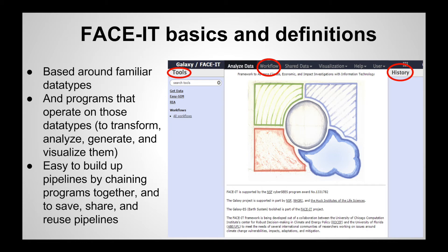I'm now going to talk briefly about three key components to get you spatially comfortable with this workspace. On the left is the tools column – a collection of all the different applications that are integral to FaceIt or developed by different communities. Currently we have three different sets of tools: Get Data, EasySim, and RIA. There's also the Workflow tab, and the History column on the right, which is one of the most important parts of the FaceIt platform.